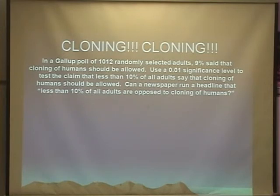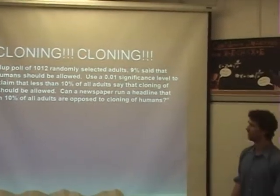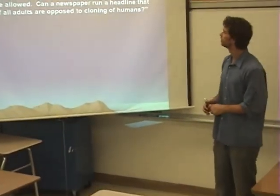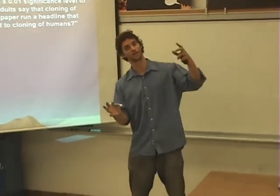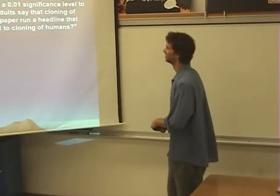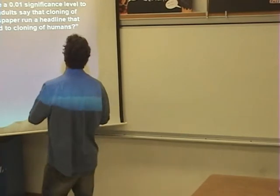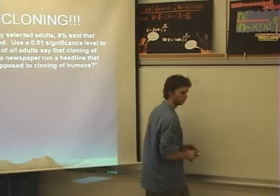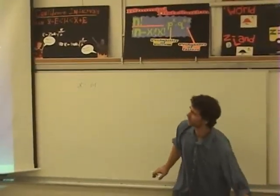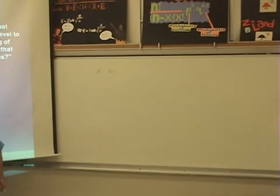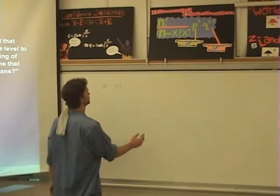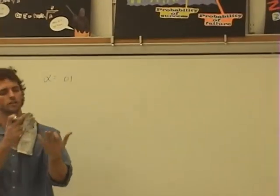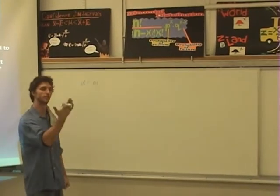Can a newspaper run a headline that less than 10% of adults are opposed to cloning of humans? That's your secondary question. You need to run the hypothesis test first. So first of all, we need to write down the claim. The claim is that less than 10% of all adults say that cloning of humans should be allowed. Does this seem like a proportion, a mean, or a standard deviation?